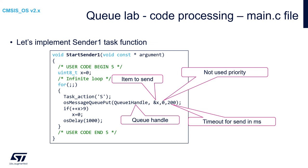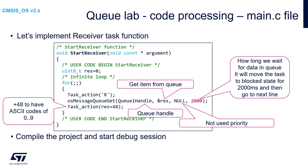Now let's look at the receiver task. The receiver task uses the startReceiver function. We need to specify one local variable: within the userCodeBeginStartReceiver section, we declare an unsigned 8-bit value called RES with initial value 0. Within the infinite loop, we start from the task action — sending 'R' from receiver — and then try to get data from the queue using osMessageQueueGet. The first argument is the queue handle, and the second is the address of the variable to use as storage for data from the queue.